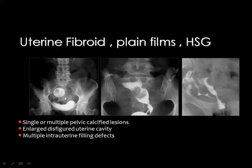Uterine fibroids may be incidentally discovered during intravenous urography for urinary symptoms. On hysterosalpingography, the uterine cavity is enlarged and may show filling defects representing submucous fibroids, or enlargement with irregular borders due to interstitial fibroids within the uterine wall.